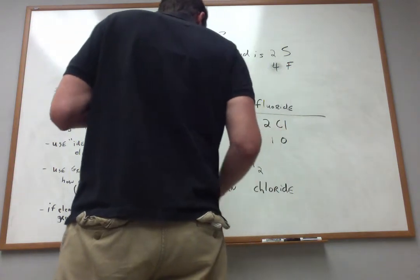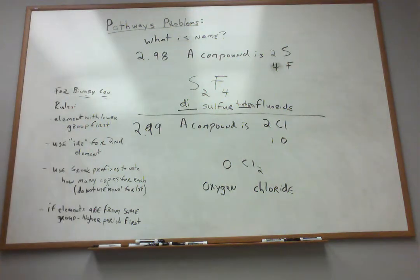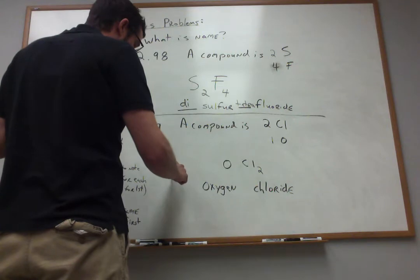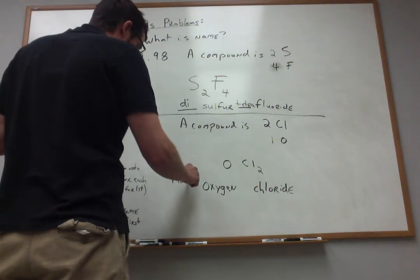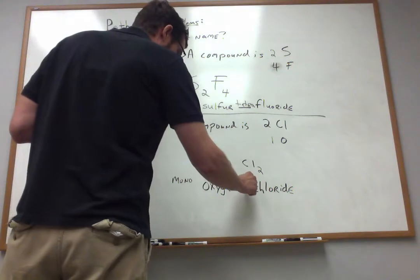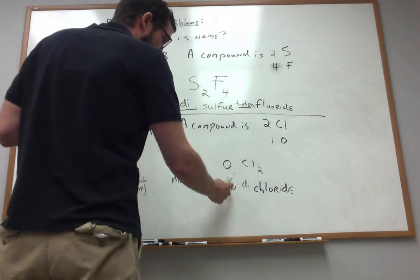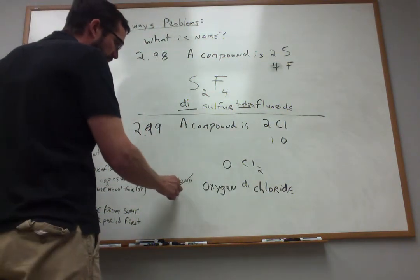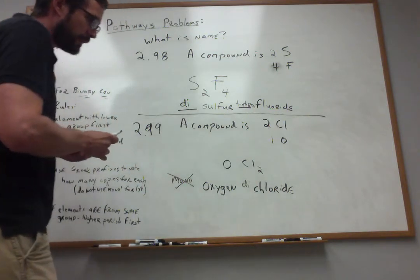And I'll write the root name for the other substance, switching to the IDE ending. So I'm kind of starting here with oxygen chloride. But does that tell the whole story? It doesn't, because I have not specified how many copies of each. So since it's OCl2, I guess I could write mono-oxygen and di-chloride. But remember, for that first element, we typically do not use the prefix mono.